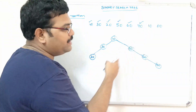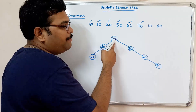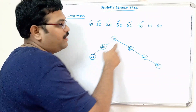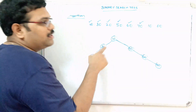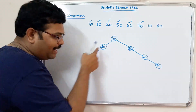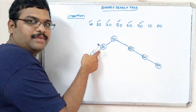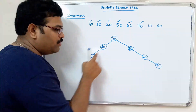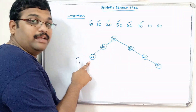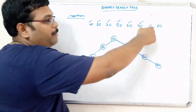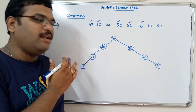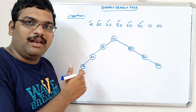Next, 10. 10 is less than 40, so it should be placed in the left subtree. Coming to the root 30 — 10 is less than 30 — so the position of 10 is on the left side of 30. But there is already an element 20 to the left of 30. So again 10 is compared with 20. 10 is less than 20, so 10 is placed towards the left of 20.